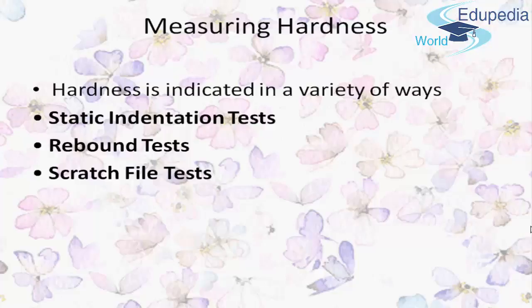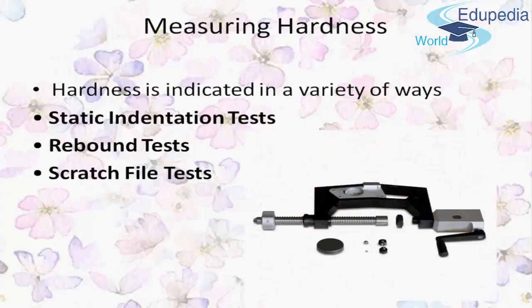Hardness is indicated in a variety of ways, named after the tests used to measure it. The first is the Static Indentation Test, where a ball, cone, or pyramid is forced into the surface of the metal or non-metal being tested, and the relationship between the load and the area or depth of indentation is the measure of hardness. Examples include Brinell, Knoop, Rockwell, and Vickers hardness tests.